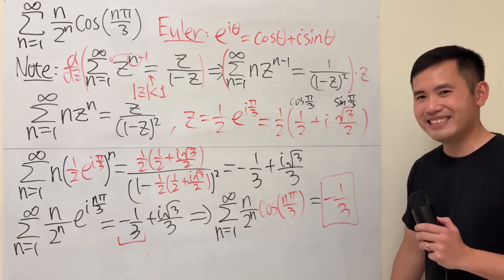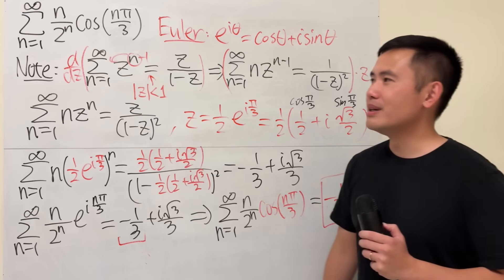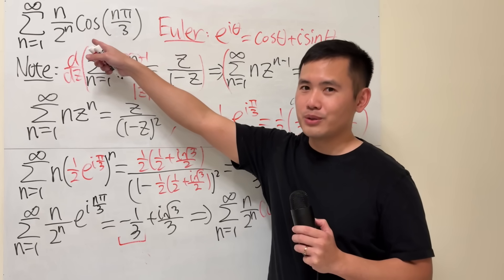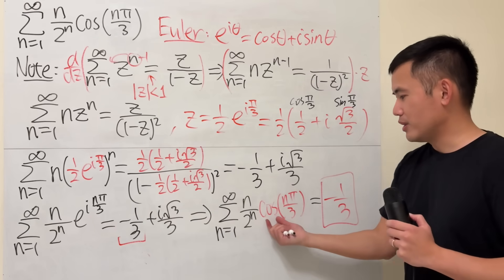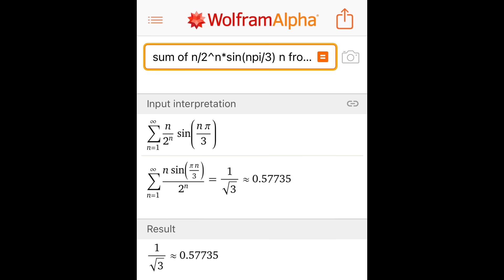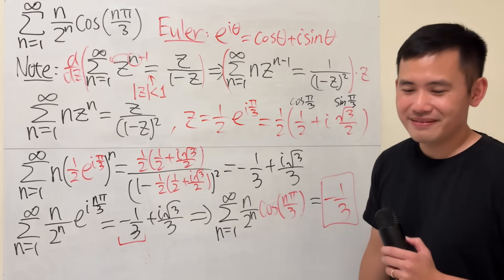Very cool, isn't it? We use complex numbers to help us solve something totally real. And that will be the answer if you change the cosine to sine. That's it.